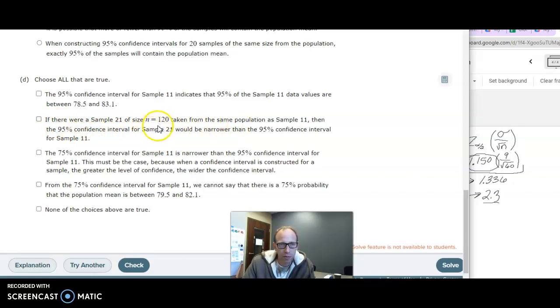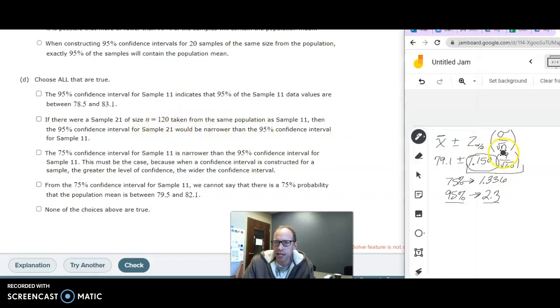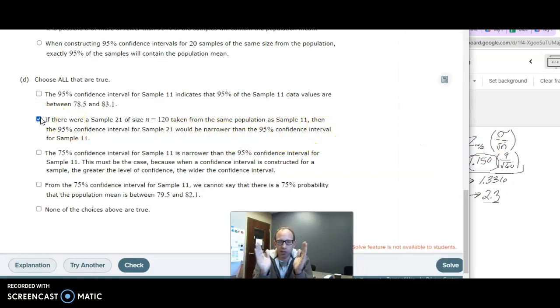Here, so remember, we had a sample size of 60. They're saying, what would happen if you take a sample size of 120? Well, let's think. If this number went from 60 to 120, this fraction would decrease, which would make our error smaller. So our confidence interval there would be smaller. So it would indeed be narrower than the current one based on 60. The higher the sample size, the more precise you get with your confidence interval.